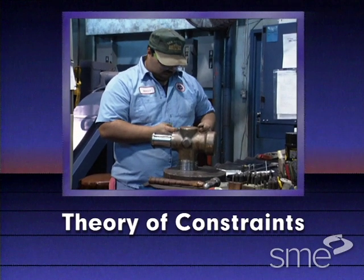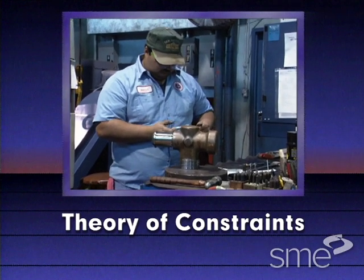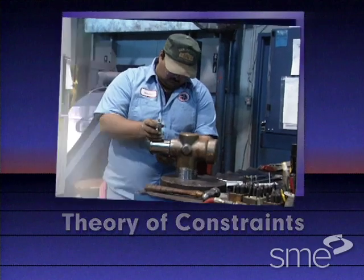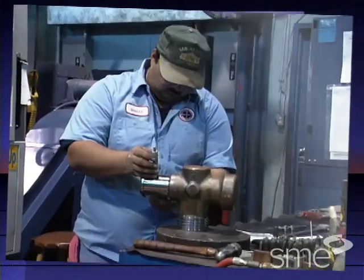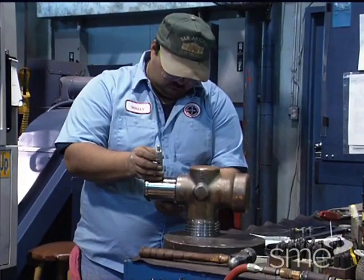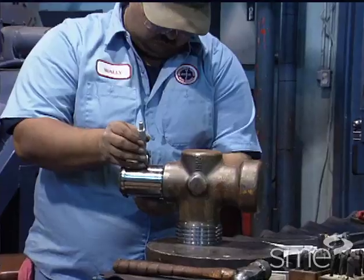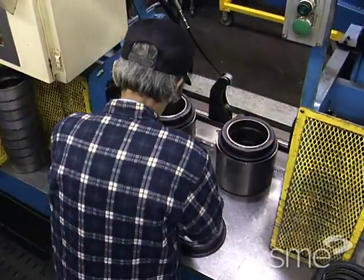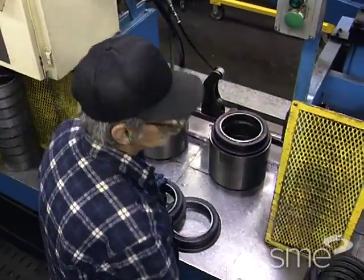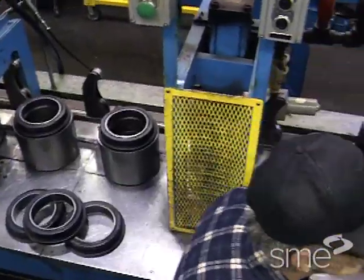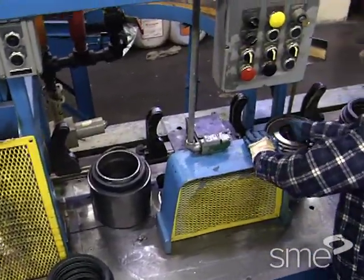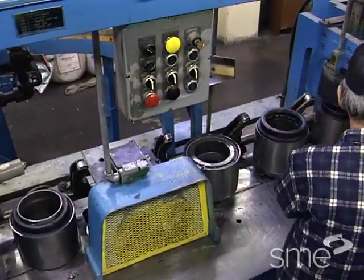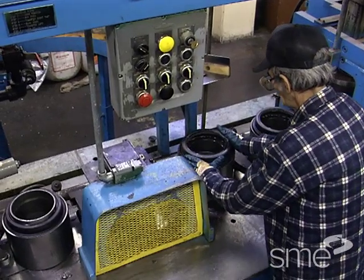For most manufacturing companies, meeting the ISO 9000 quality standard has been one of the most important steps ever taken to improve their manufacturing operation. But in most cases, business owners and stockholders are not satisfied merely by knowing that a company makes products with consistent quality.